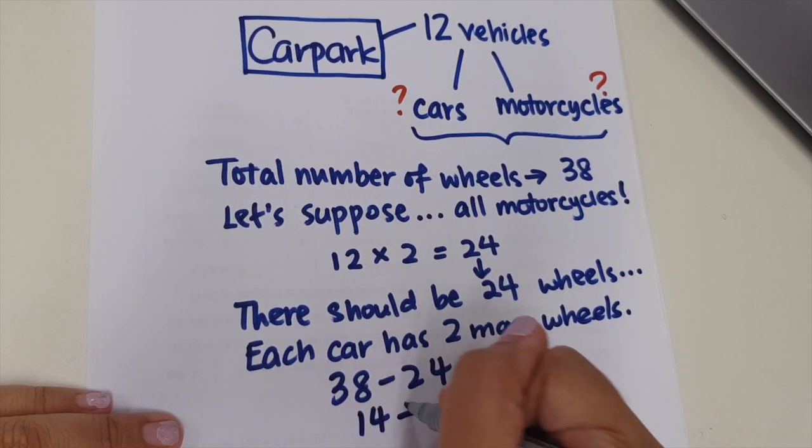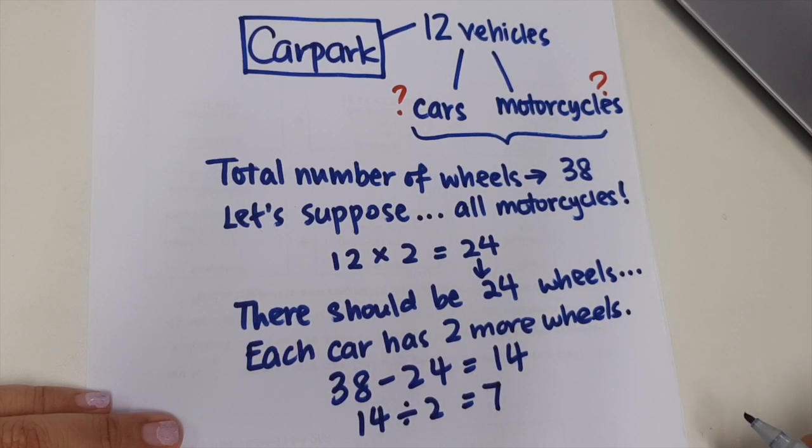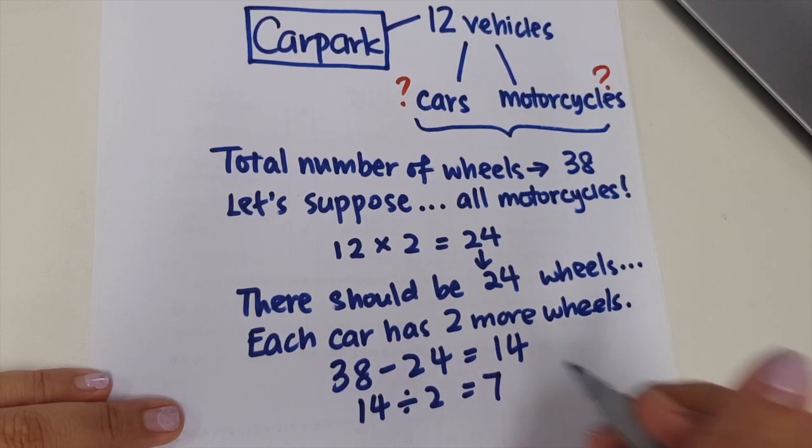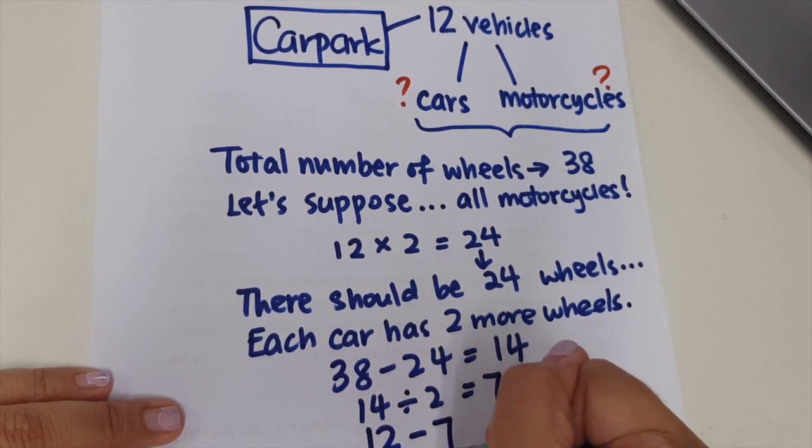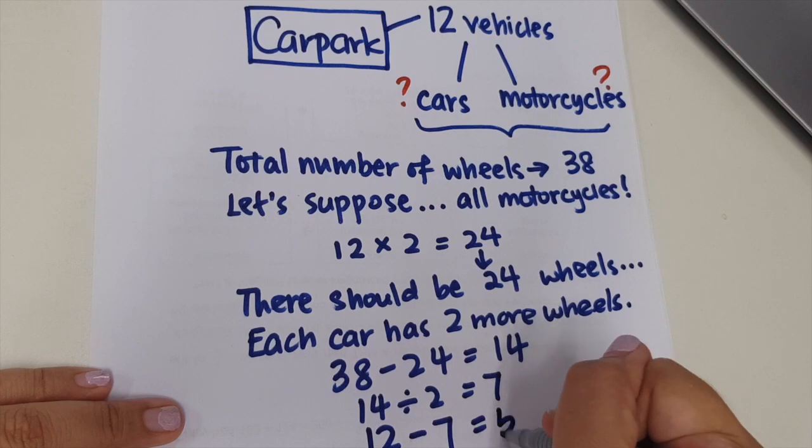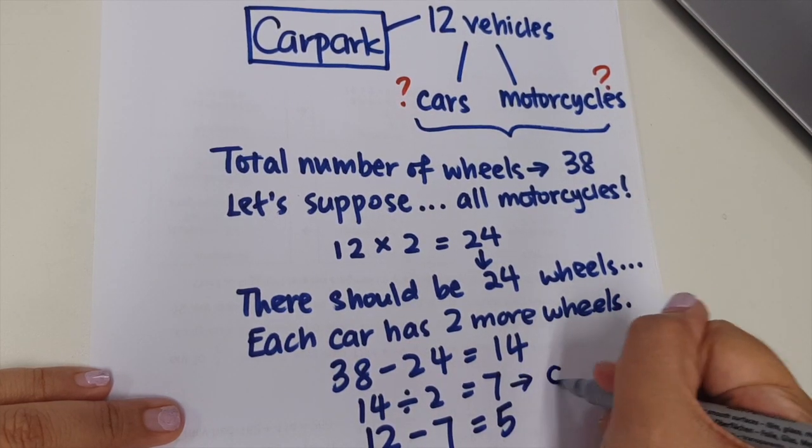38 minus 24, I'll have 14. And then each of these extra wheels, every two belong to a car. Every two belong to a car. So I take two, each car will be two wheels. I divide by two, I get seven sets of two wheels. So it means that I have seven cars.